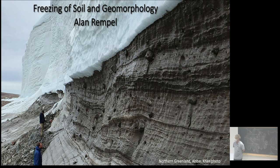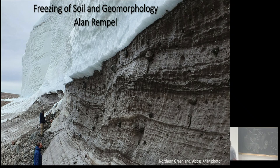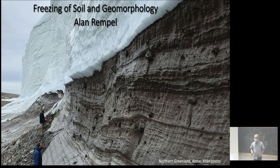I want to continue talking about things related to frost heave, but we're going to move to a different scale. These two individuals are staring at the bottom of the Greenland ice sheet, and what they see is massive material frozen into the dirt — ice has picked up from the underlying dirt — and the question is, what did that? The answer is, who knows, but I'll give you a couple of different mechanisms.